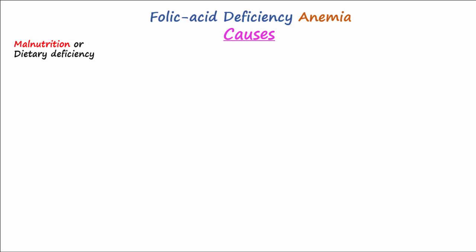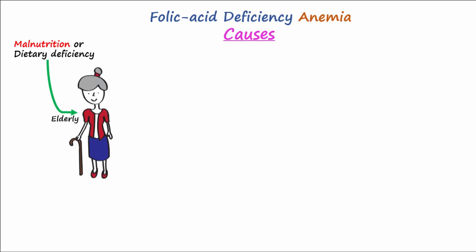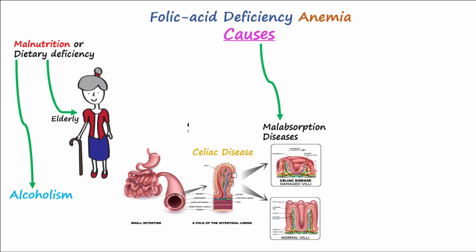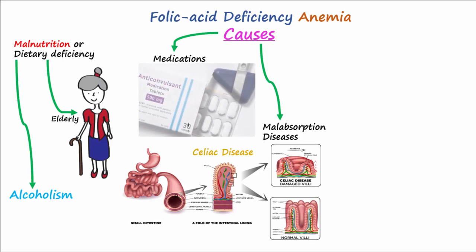The most common causes for folic acid deficiency anemia include malnutrition or dietary deficiency, more commonly seen in the elderly and with alcoholism. Malabsorption diseases such as celiac disease also increase the risk, as do medications such as anticonvulsant drugs, which interfere with the absorption of folic acid.